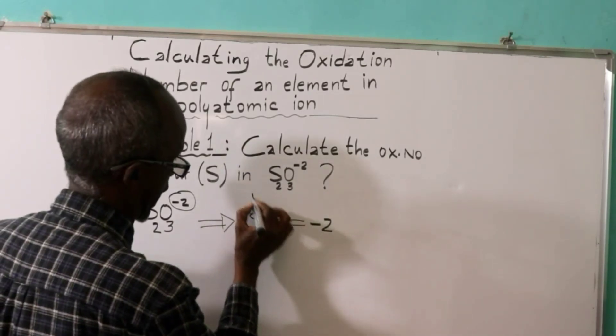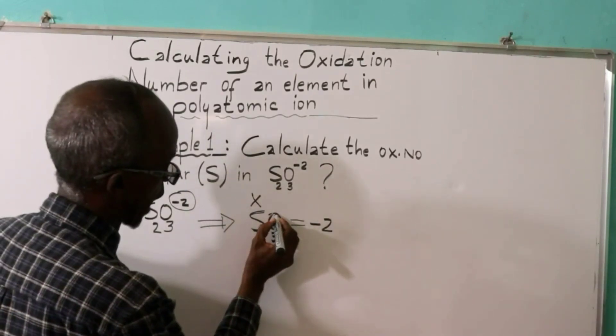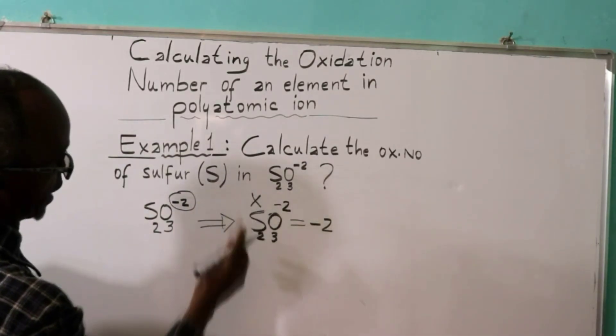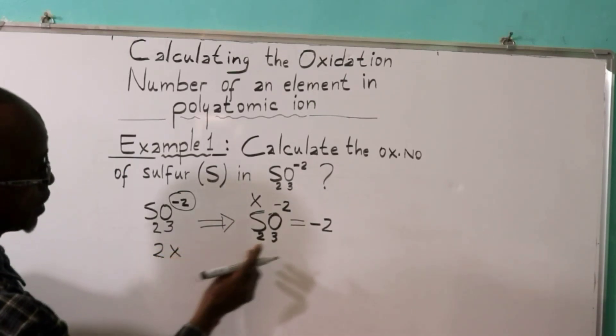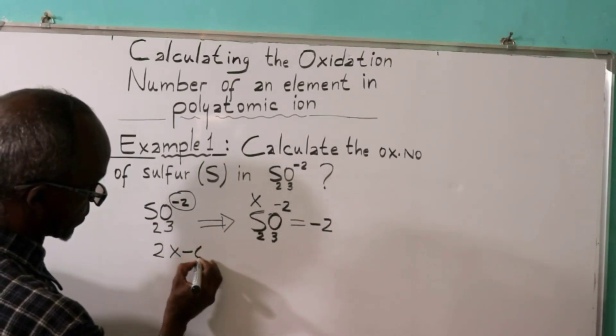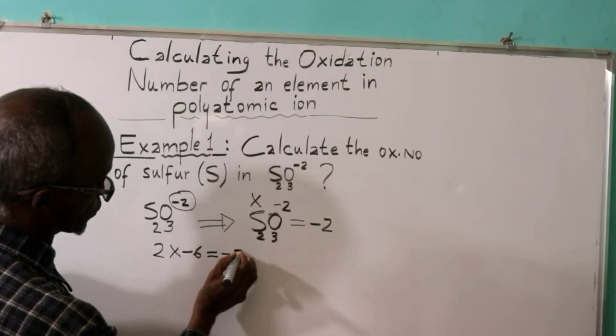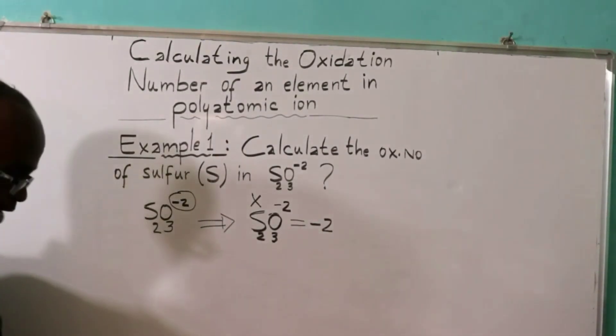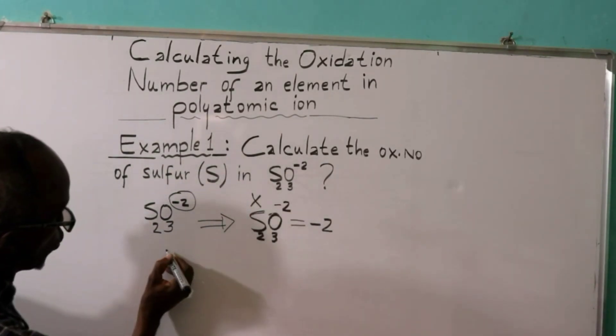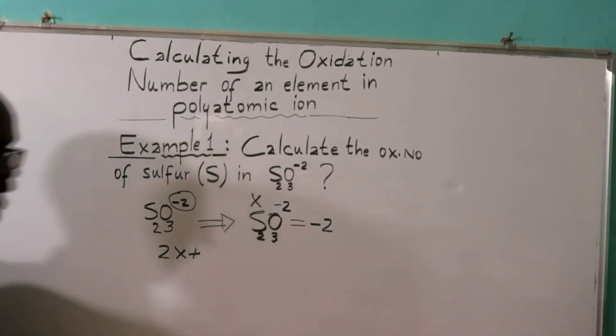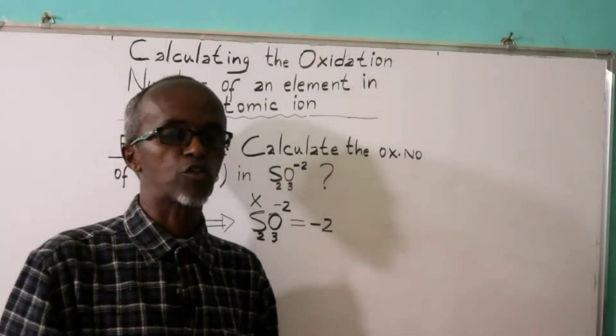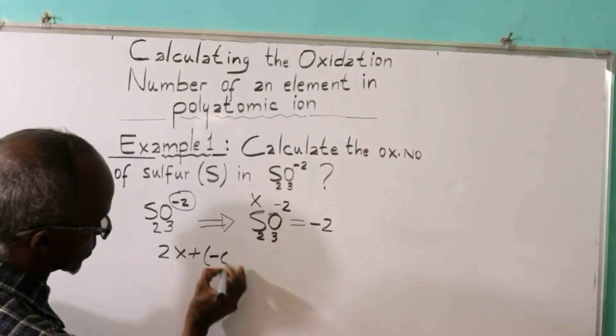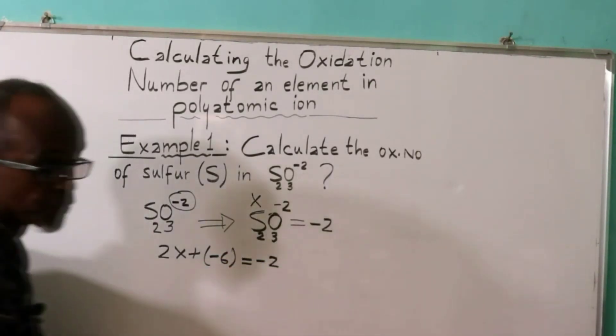Step 1: The oxidation number of oxygen is always minus two. This is two times x, so 2x, plus three times minus two (minus six) is equal minus two.